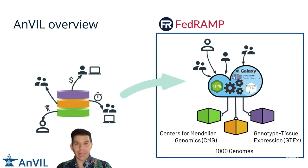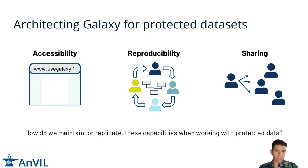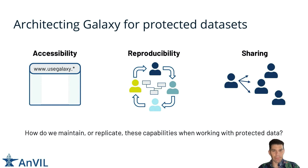But what did it take to actually get Galaxy into this environment and make it adequately compliant? If we dissect what Galaxy is, for years accessibility, reproducibility, and sharing have stood as the three pillars defining the majority of Galaxy. So how do we replicate these in a compliance-based environment that imposes stringent rules as to how an application and data can be shared and run?